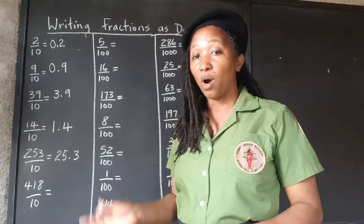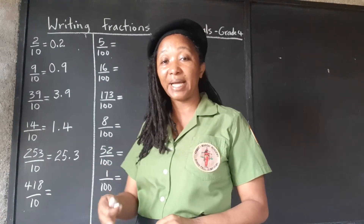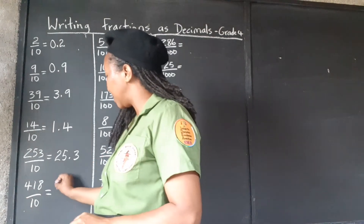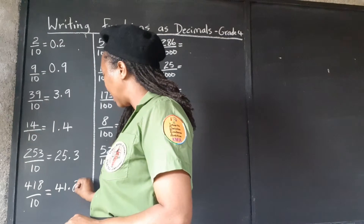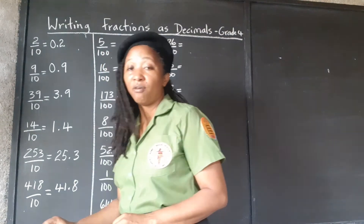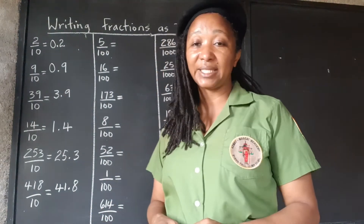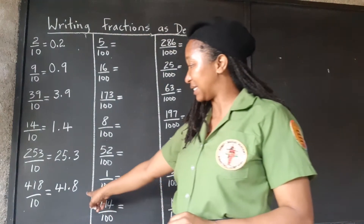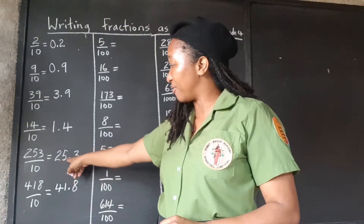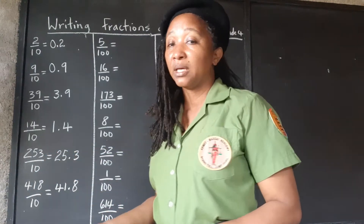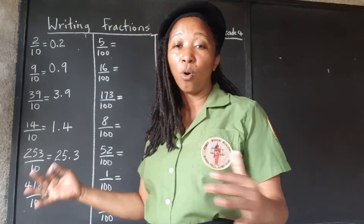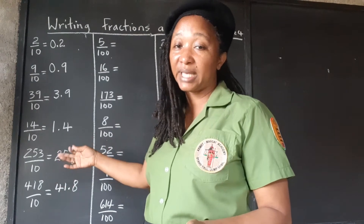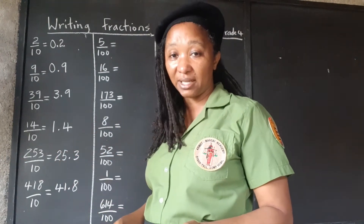For 418 tenths, since 10 is in the denominator, we're dividing by 10 and moving one place back. That takes us in between the 1 and the 8, giving us 41.8. So 418 tenths is the same as 41.8. With 253 tenths, we can take out 25 whole groups of tenths and 3 remain — we can't get a full 10 because it's just 3, so 3 out of the 10 remain.